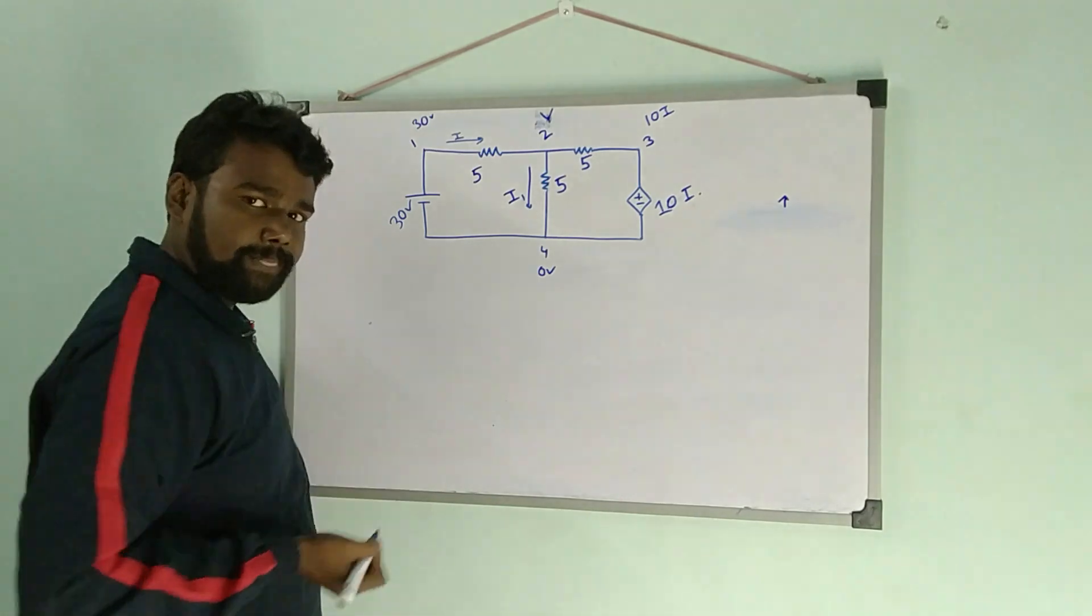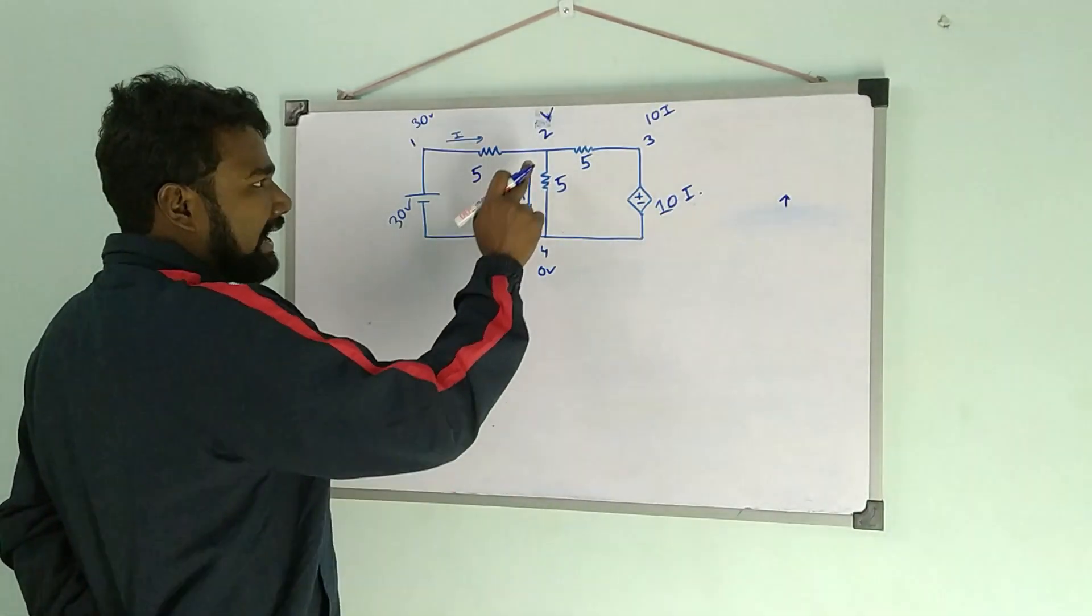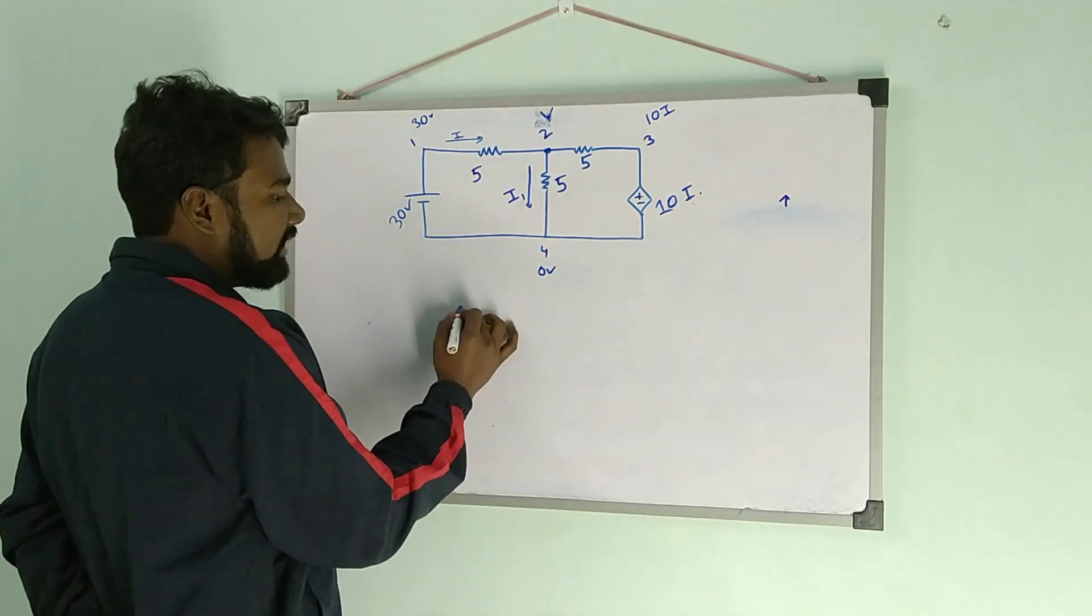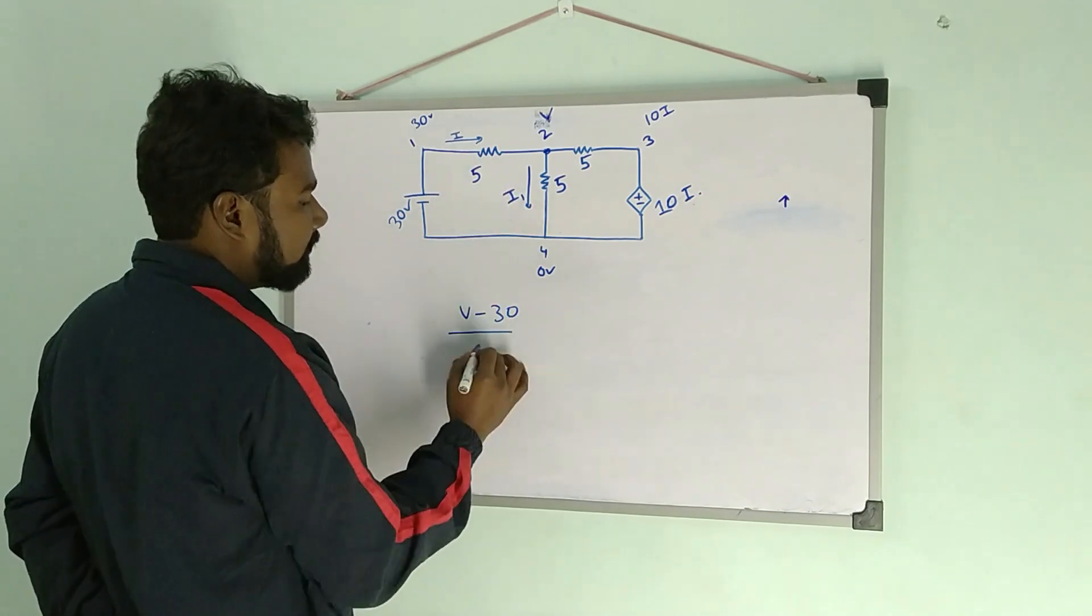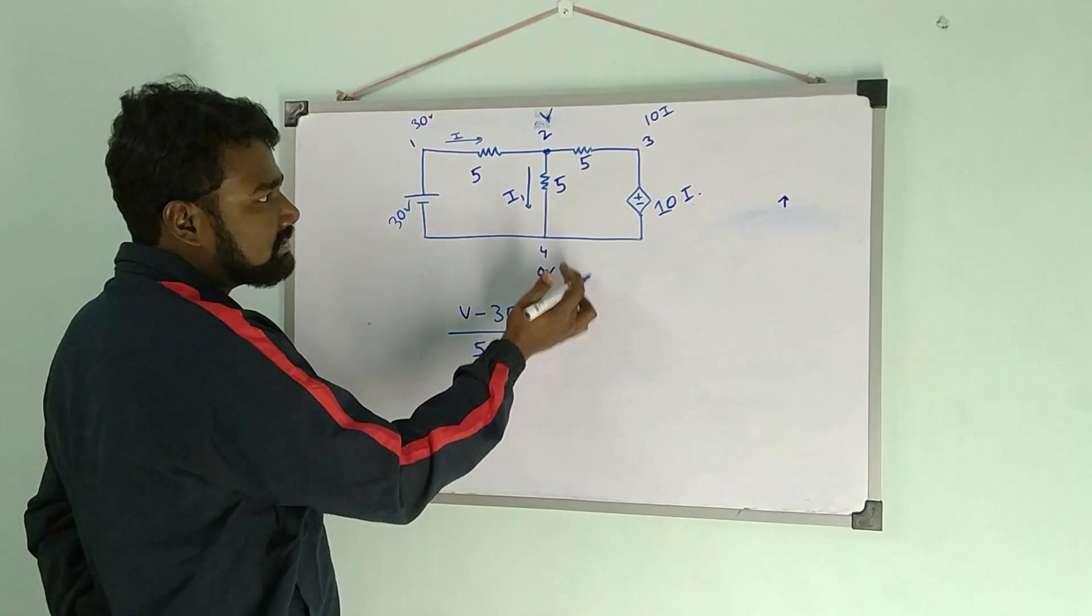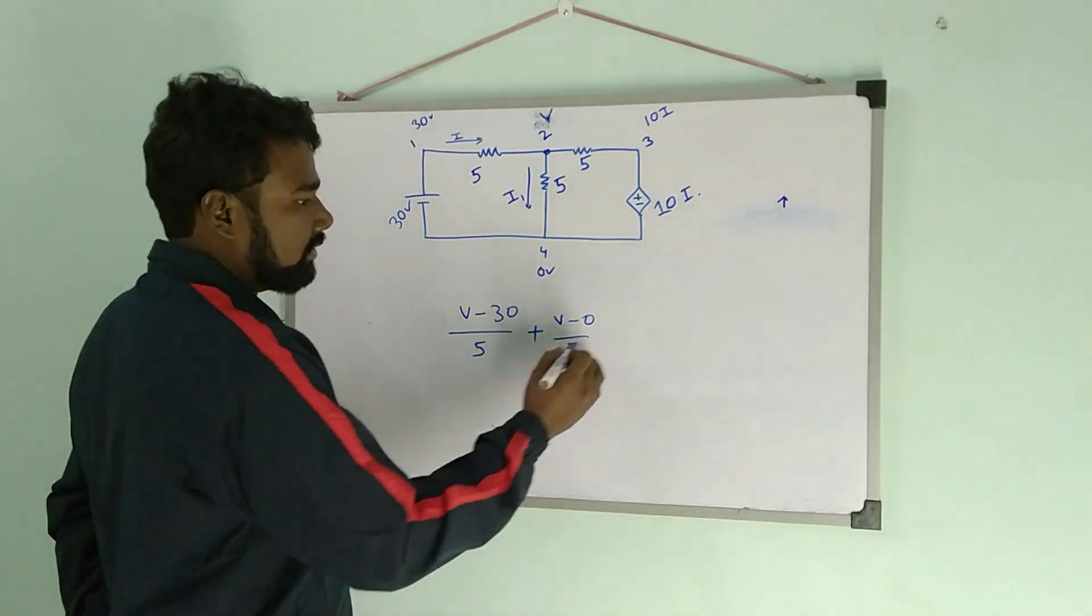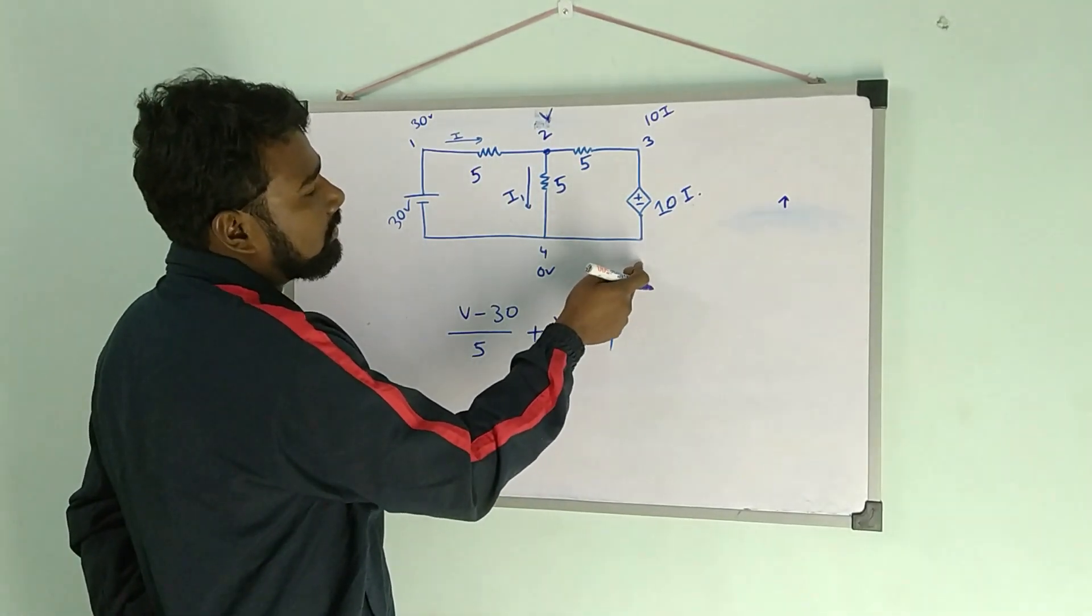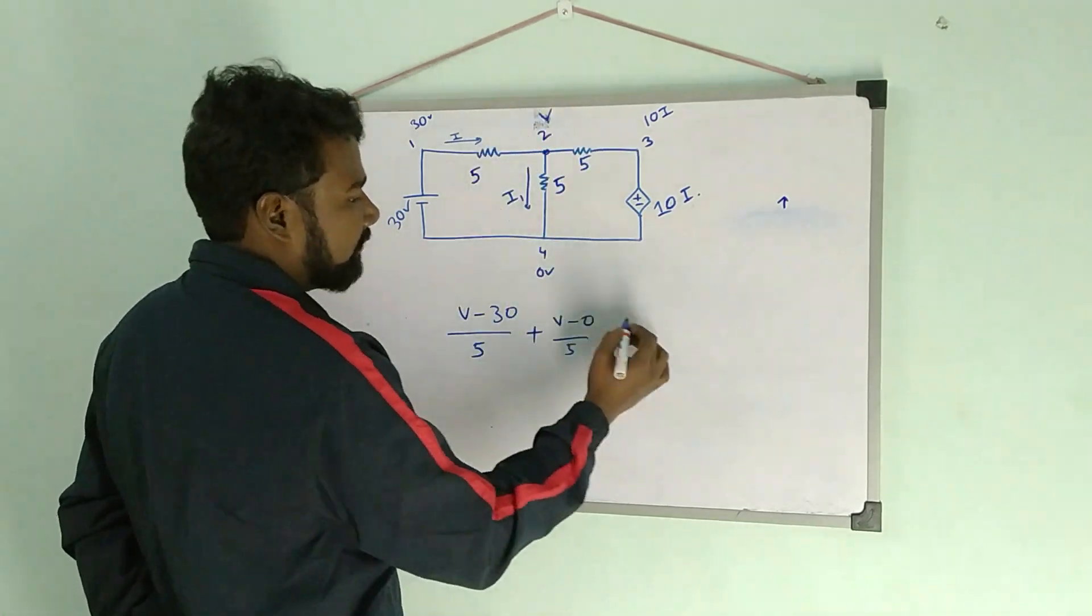Let's write the equation. Applying KCL at node 2: (v minus 30) by 5, plus (v minus 0) by 5, plus (v minus 10i) by 5, is equal to 0.